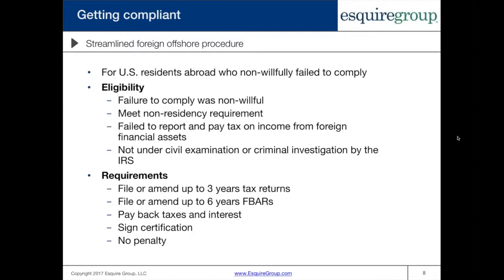If you were under the impression you were doing everything correctly and then found out you were not, these are examples where you might qualify. It had to have been an accident — not intentional behavior. The second criteria is that you meet the non-residency requirement. To participate in the foreign streamlined procedure, you need to have spent enough time in a foreign country. If you don't meet the non-residency requirement, you would need to participate in the domestic filing procedures or one of the other options.